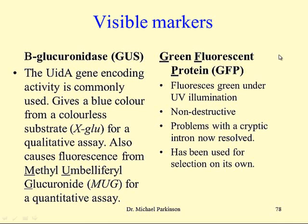Green fluorescent protein (GFP) is increasingly being used instead. It fluoresces green under UV illumination and is non-destructive — all you need is a strong fluorescent light over your Petri dish, and any transformed colonies will fluoresce green. There were problems: a cryptic intron in the GFP gene was recognised and spliced out in plants but not in jellyfish. That problem has now been resolved, and GFP has been used successfully for selection on its own.